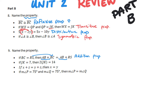I should clarify: number 8 was the reflexive property of congruence, the transitive property of equality, the distributive property, and the symmetric property of congruence. Sometimes we'll have to say whether it's congruence or equality — that's 100% based on what symbols they used.